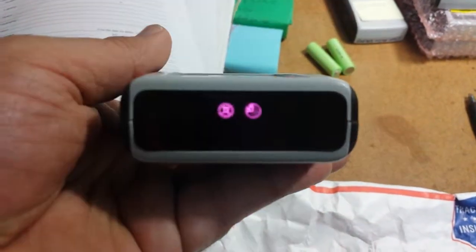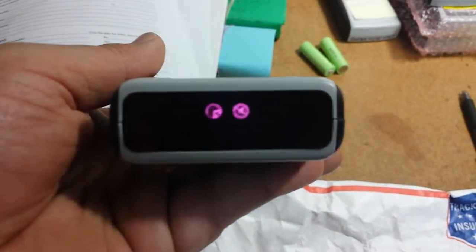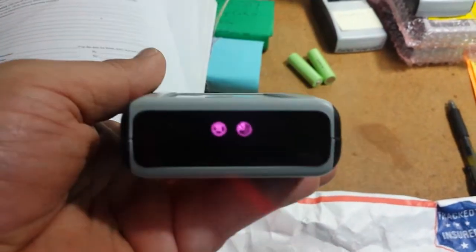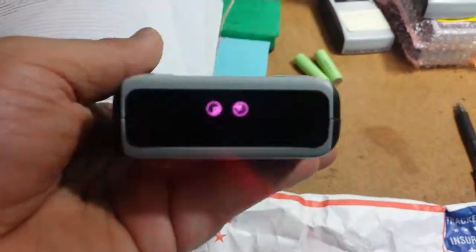See how they're lit up? They're not bright, but you can see them. Those two right there, that's the infrared. So that's how you tell the infrared is on.